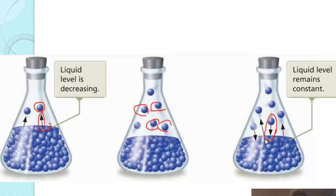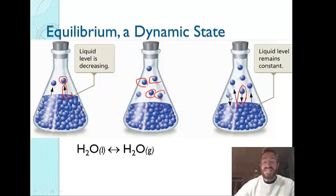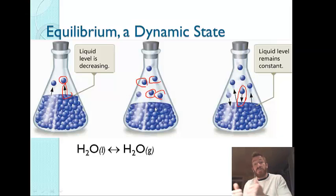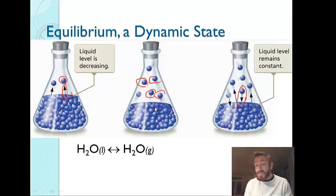When these two processes occur at equal rates — when the rate of evaporation (liquid to gas) and condensation (gas to liquid) are equal — we say the system is at equilibrium. We say it's dynamic because as the reactants are forming the products, the products are at the same time forming the reactants. That doesn't mean you have to have the same amounts, but the rates have to be equal.